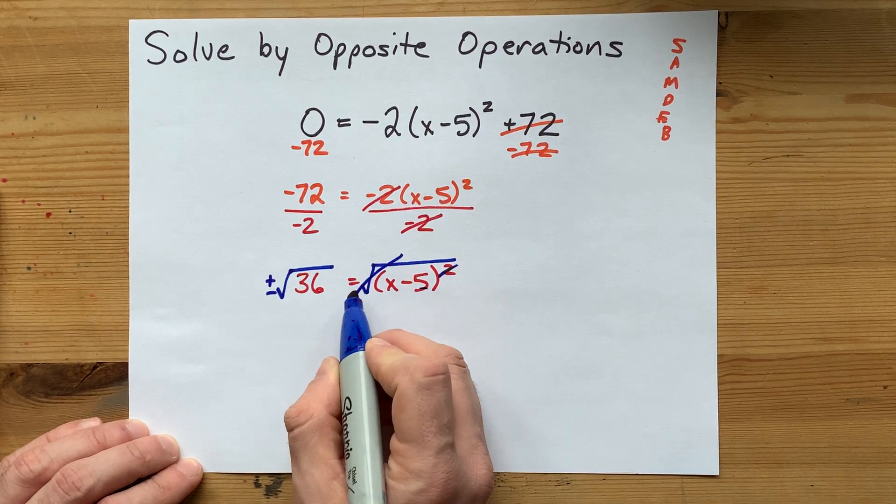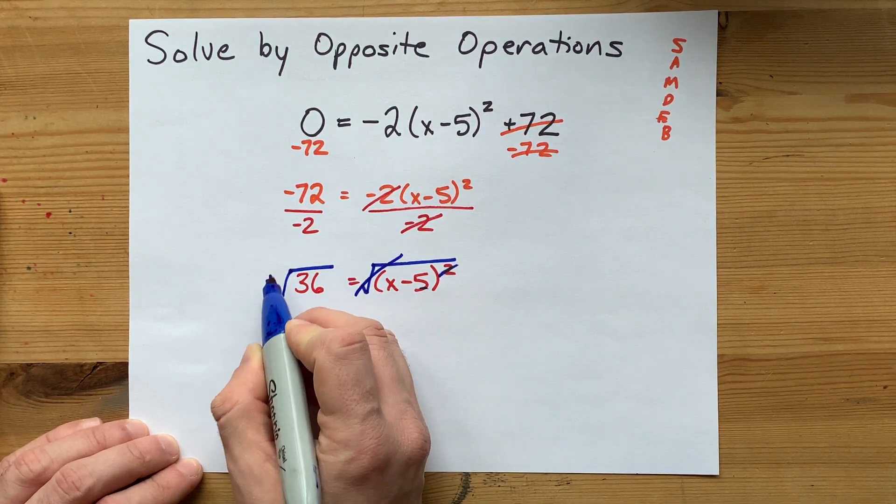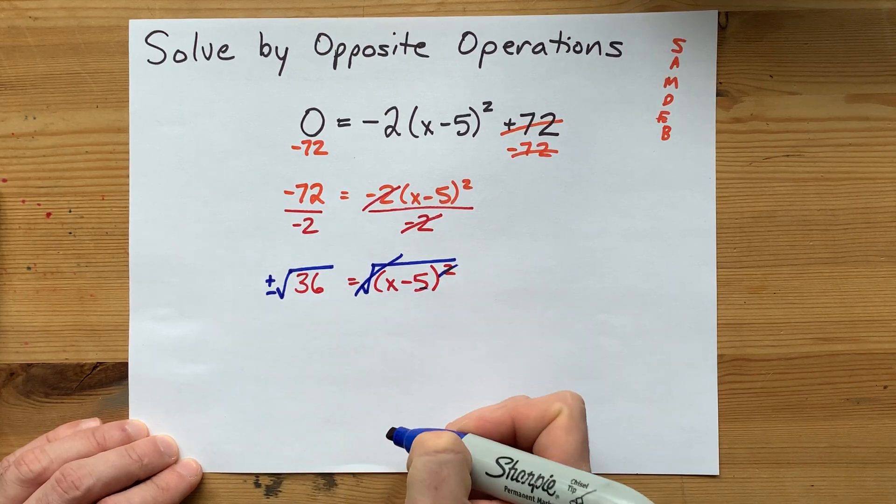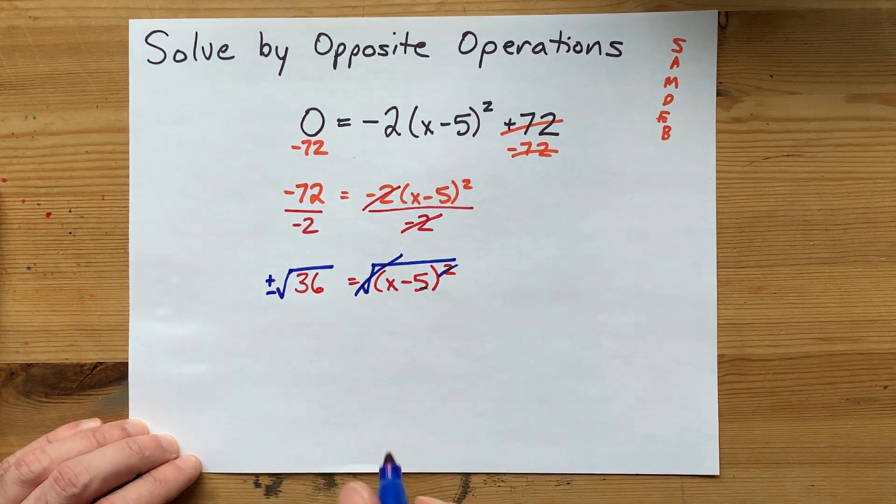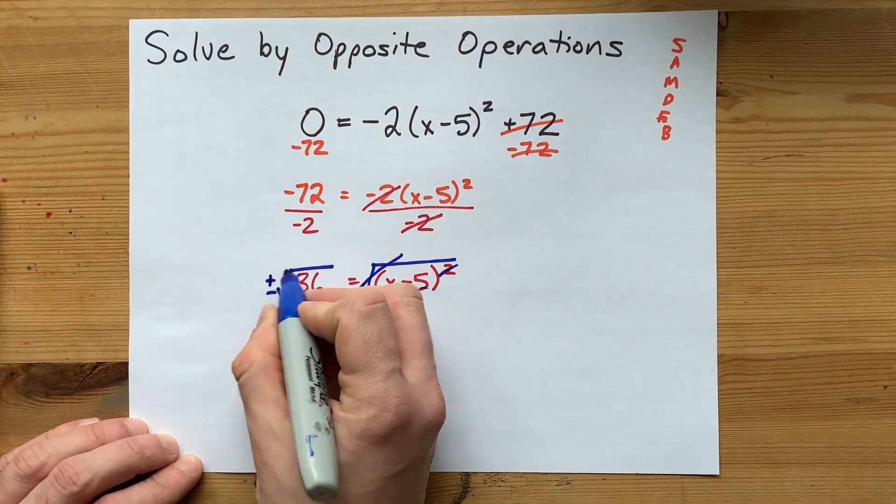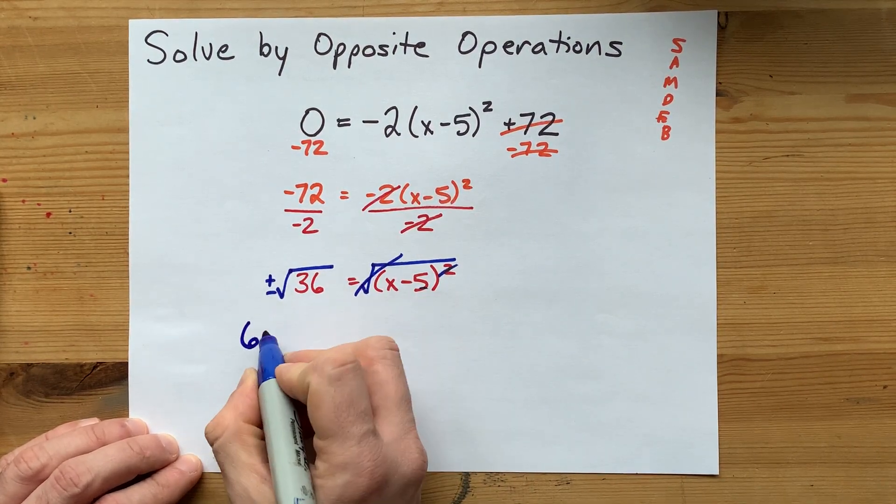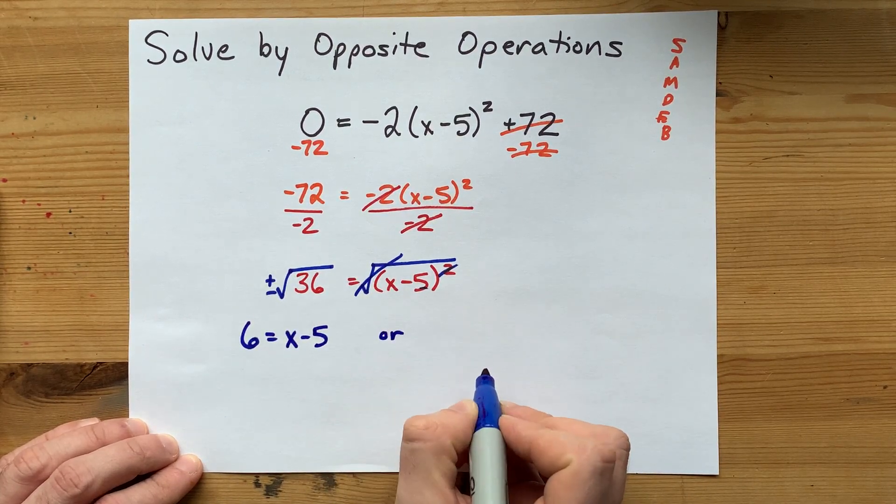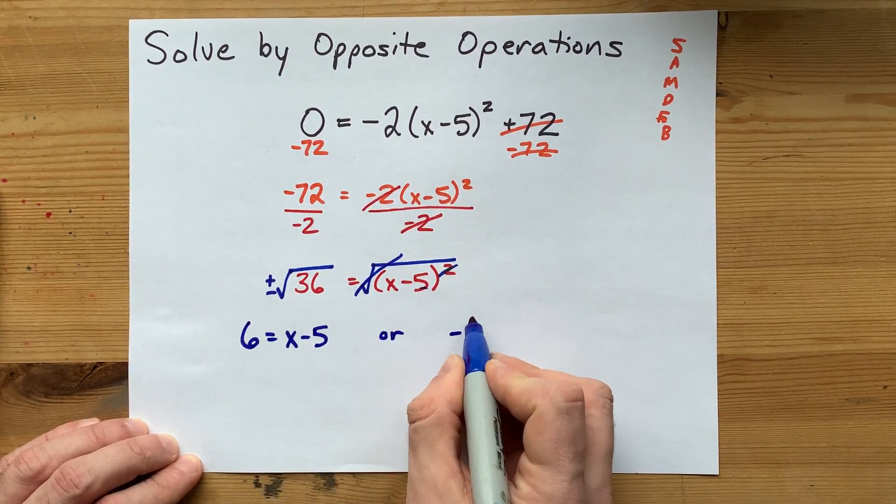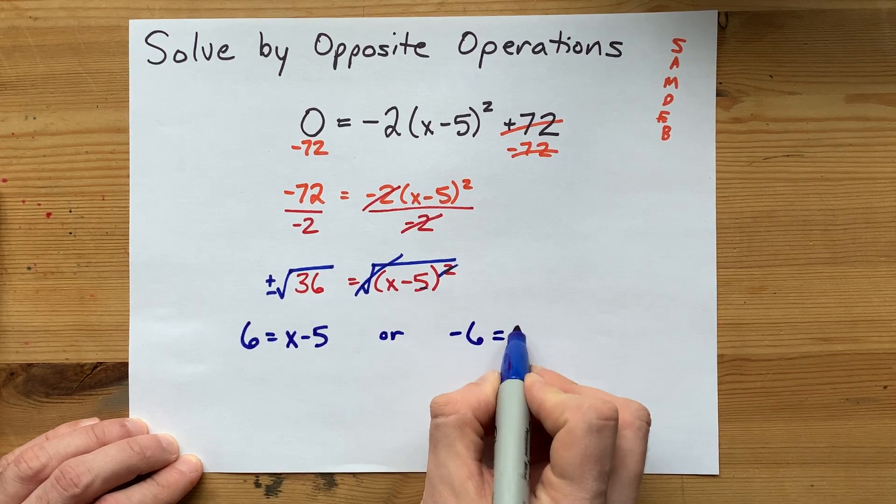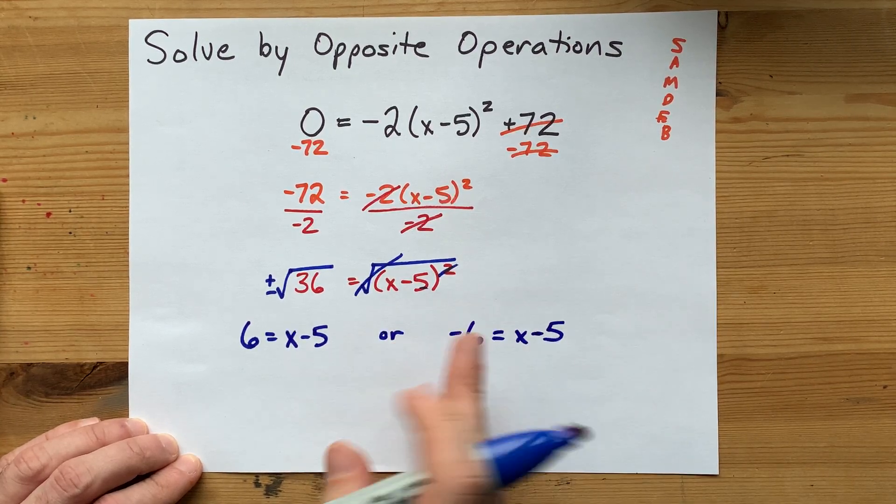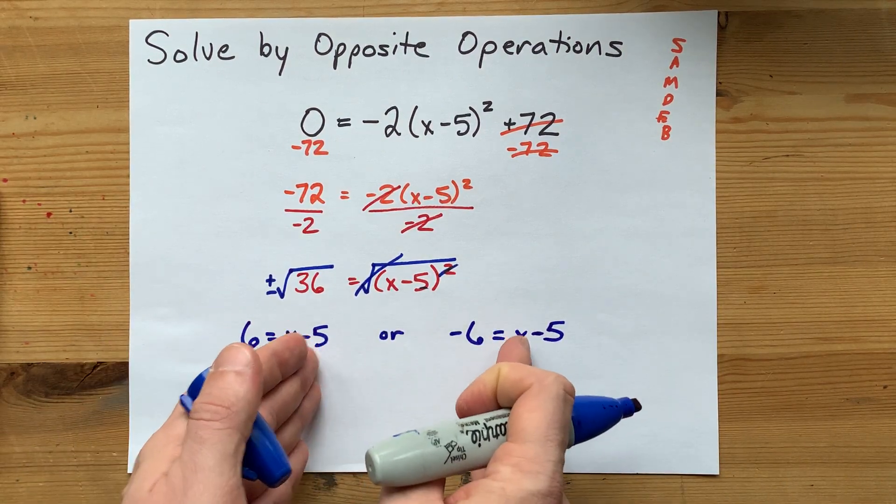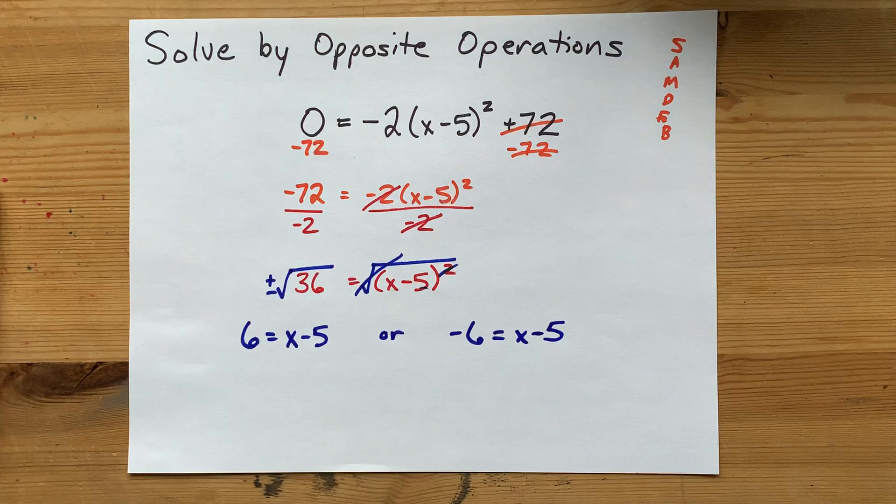But x minus 5 can equal both positive square root of 36 or negative square root of 36. The way we write that is positive root 36 is positive 6, that equals x minus 5, or you could also have gotten negative 6, that could also equal x minus 5. There are two possible solutions, and the word OR tells you that x can be either of these to satisfy that equation.